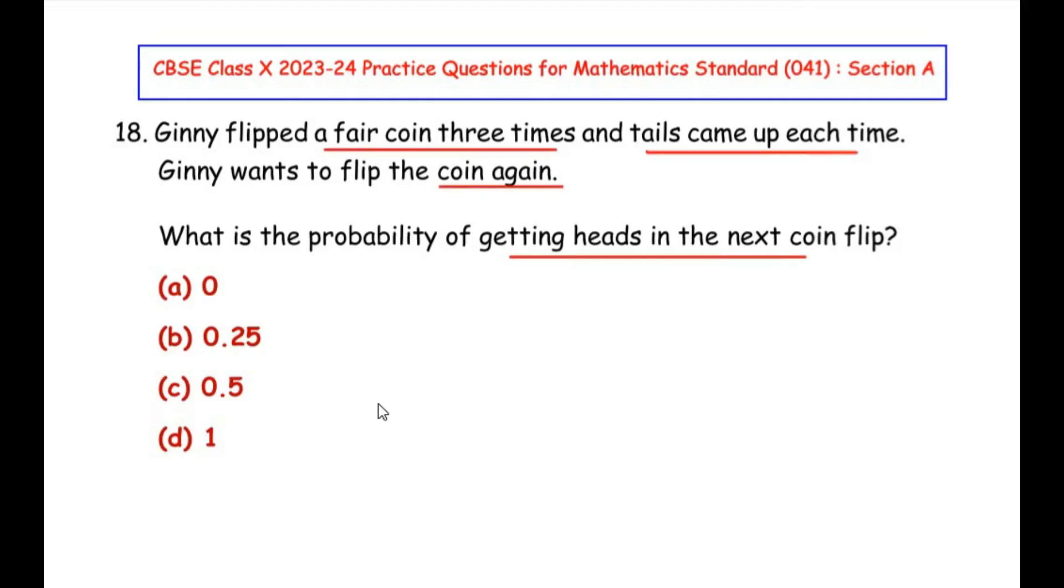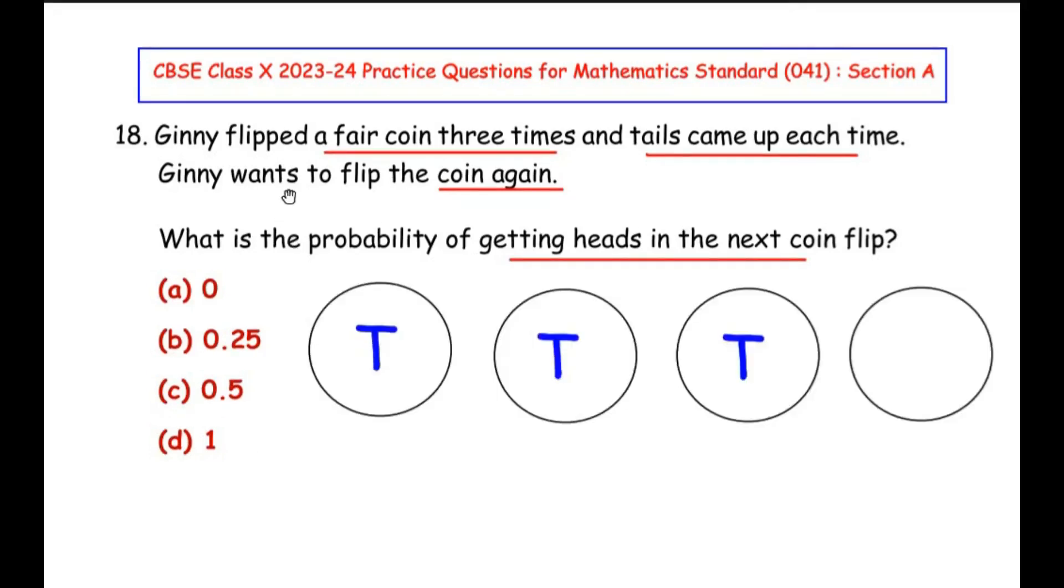Now let us try to understand this question by taking a small diagram. If you pay close attention to the wording given here, Genie flipped a fair coin three times. That means she is considering the same coin and she is flipping it many times.